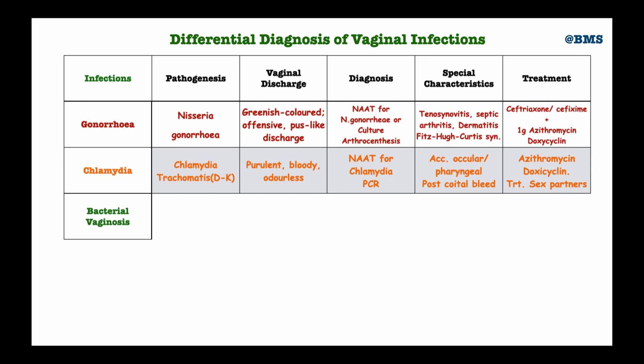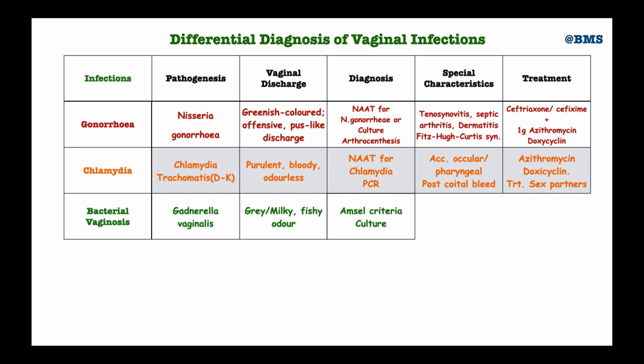The next infection is bacterial vaginosis. The causative organism is Gardnerella vaginalis, which thrives when the normal environment of vaginal secretion is altered. The discharge from bacterial vaginosis is usually gray and milky in color with a characteristic fishy odor. The diagnostic criteria for bacterial vaginosis is the Amsel criteria.